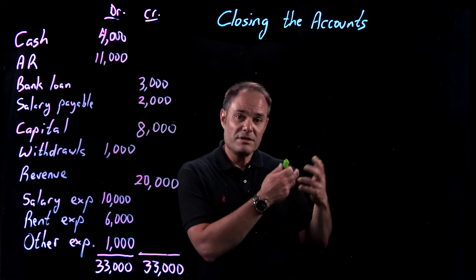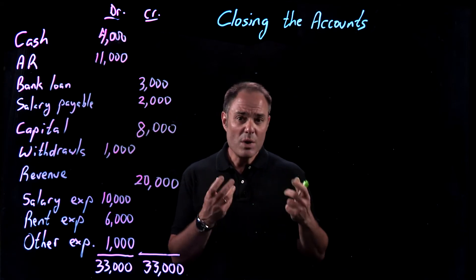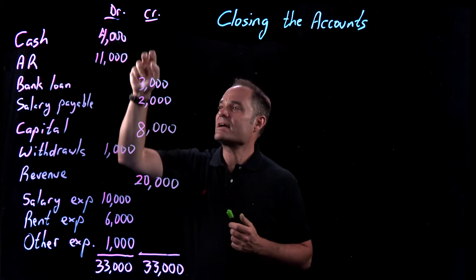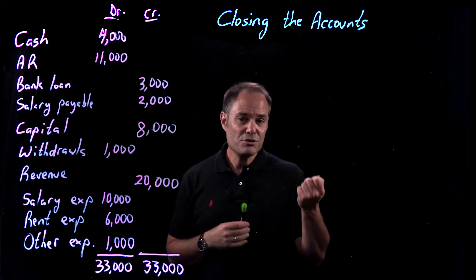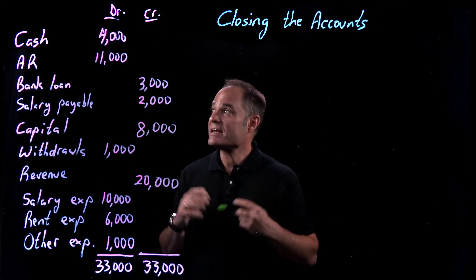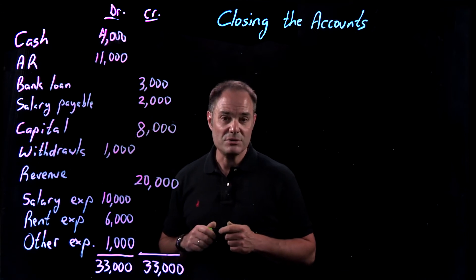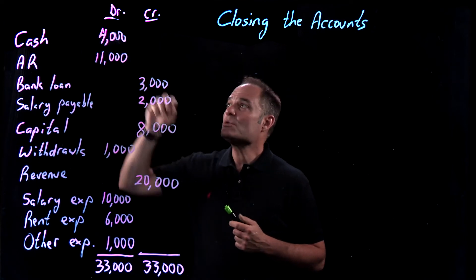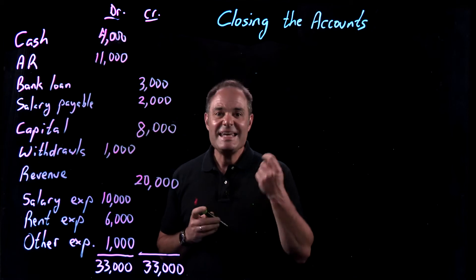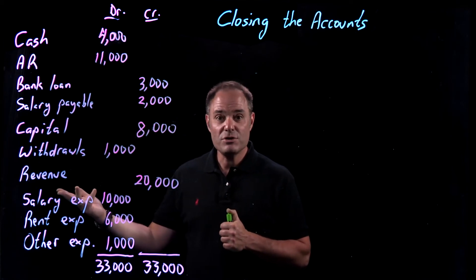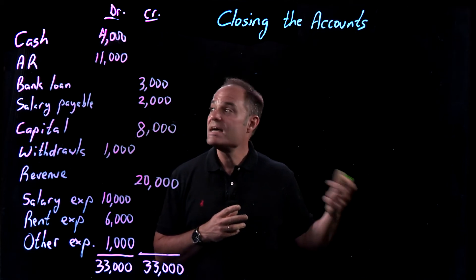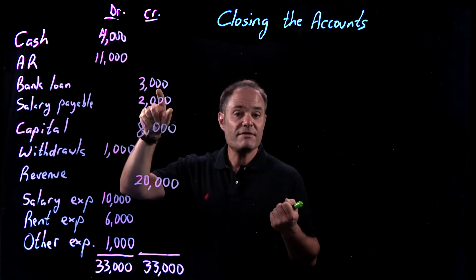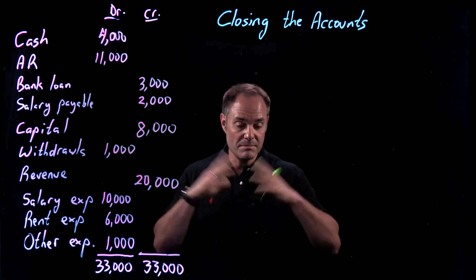We saw how we went through and prepared the financial statements, and we said at the end of the last video that we're not quite done yet. Think about what some of these accounts are. We have cash and accounts receivable. Cash is a permanent account — if on December 31st you had $4,000 in your account, you'd still have $4,000 on January 1st. Same goes for loans — if you owed the bank $3,000 on December 31st, you still owe them $3,000 on January 1st. It doesn't just disappear.